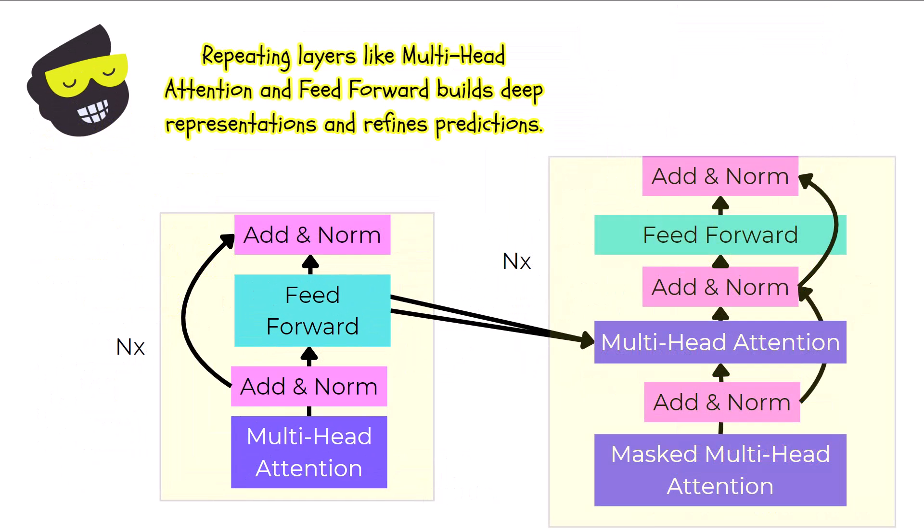The layers in both the encoder and decoder are repeated multiple times, as indicated by the NX notation. These repeated layers consist of the multi-head attention, add and norm and feed forward components. This repetition allows the model to build deep and complex representations of the input data, enabling it to learn the patterns. Each layer refines the information further, enhancing the model's ability to understand and generate accurate predictions. This stacking of layers is essential and key to the powerful performance of transformers.